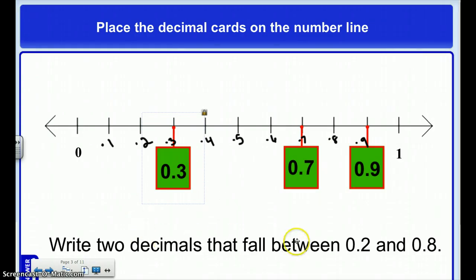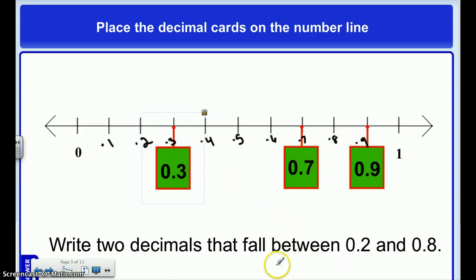Next, I'm going to write two decimals that fall between 2 tenths and 8 tenths. The two decimals that fall between there are 3 tenths and 7 tenths.